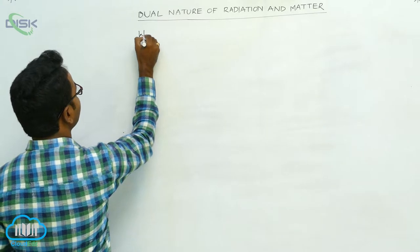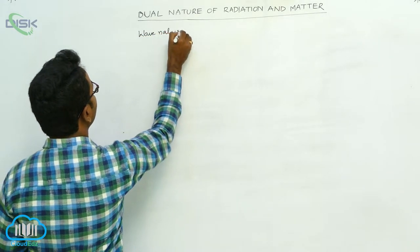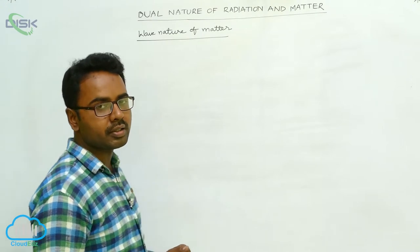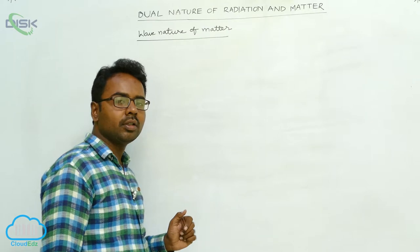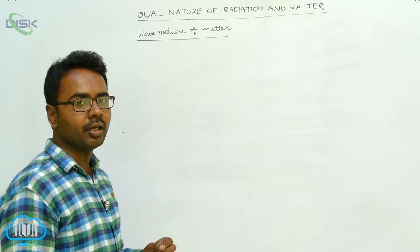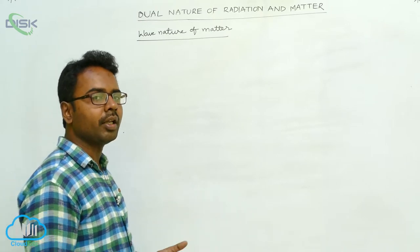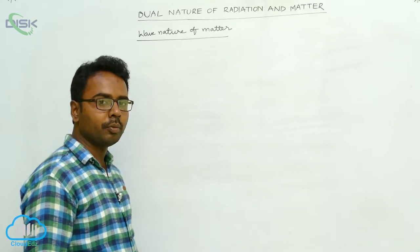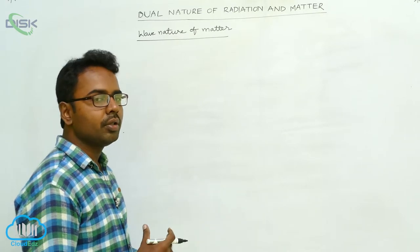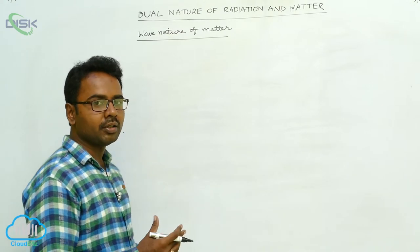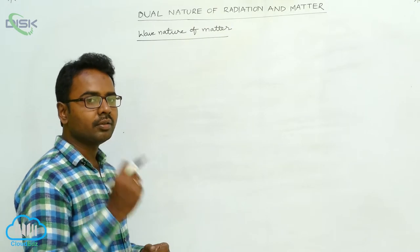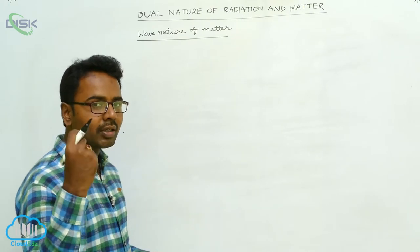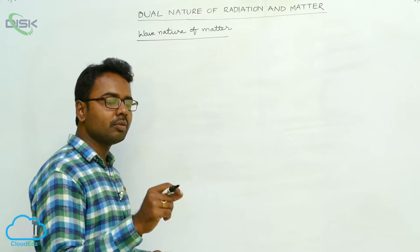Here we study the wave nature of matter. The wave nature of matter was introduced by the scientist de Broglie. We know that radiation exhibits both wave nature and particle nature. Radiation exhibits wave nature during phenomena such as interference and diffraction, and also in daily life when we are gathering and focusing light through a lens — in those cases, light behaves as a wave.